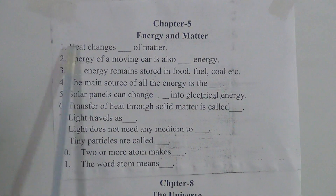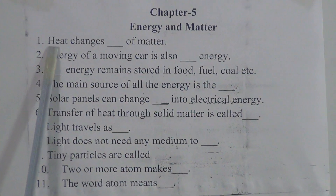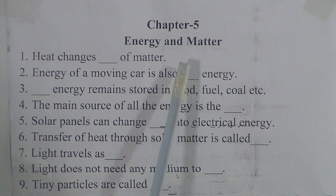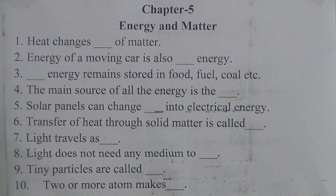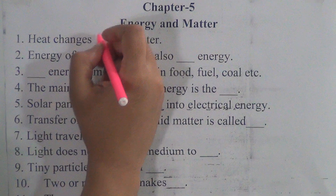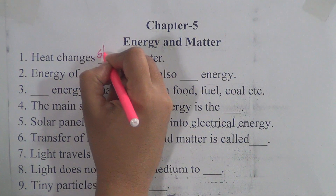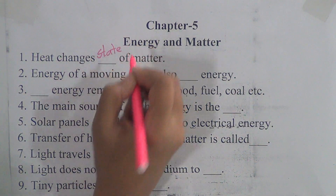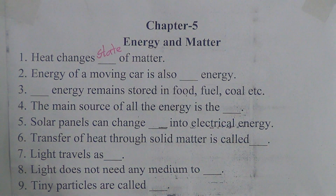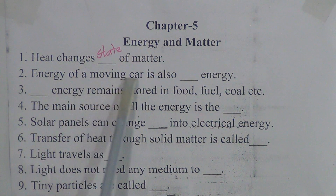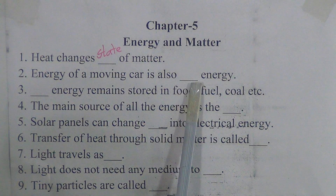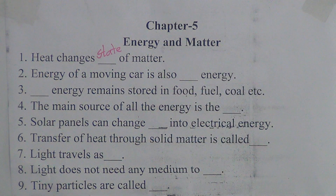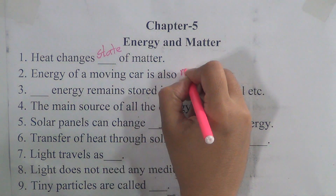The first fill in the blanks we will solve is from chapter 5. The name of the chapter is Energy and Matter. Number one: heat changes the state of matter. Number two: the energy of a moving car is also mechanical energy.